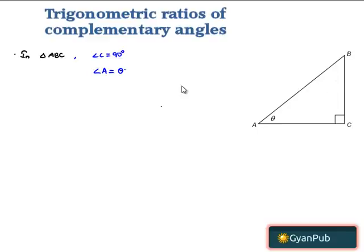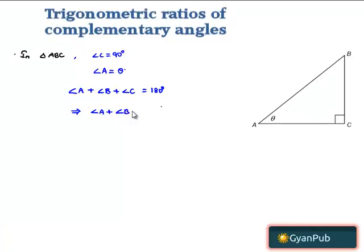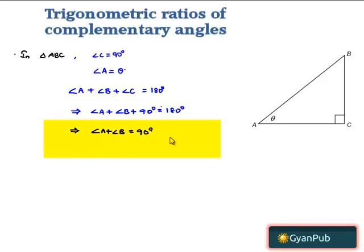We know that the sum of angles in any triangle is equal to 180 degrees. Here, angle A plus angle B plus angle C equals 180 degrees. Since angle C is 90 degrees, angle A plus angle B equals 180 minus 90, which is 90 degrees. Therefore, the sum of angles A and B is equal to 90 degrees, meaning angle A and angle B are complementary.